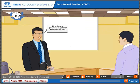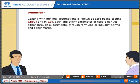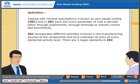First, let me give you a general definition of ZBC. Costing with minimal assumptions is known as zero-based costing, ZBC. In ZBC, each and every parameter of cost is derived either through experiments, through formulae, or industry norms and benchmarks. ZBC incorporates different activities involved in the manufacturing process of the components and thus evaluates its price at every elemental activity level.